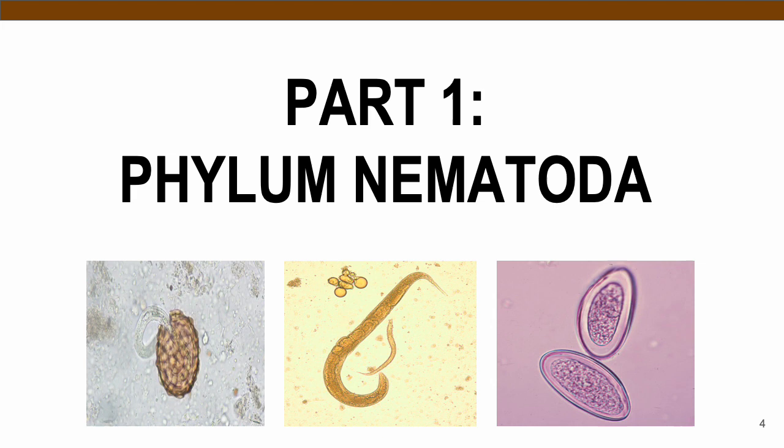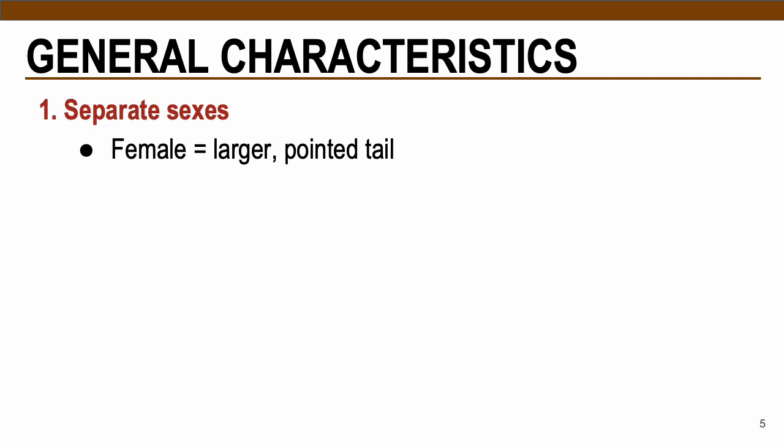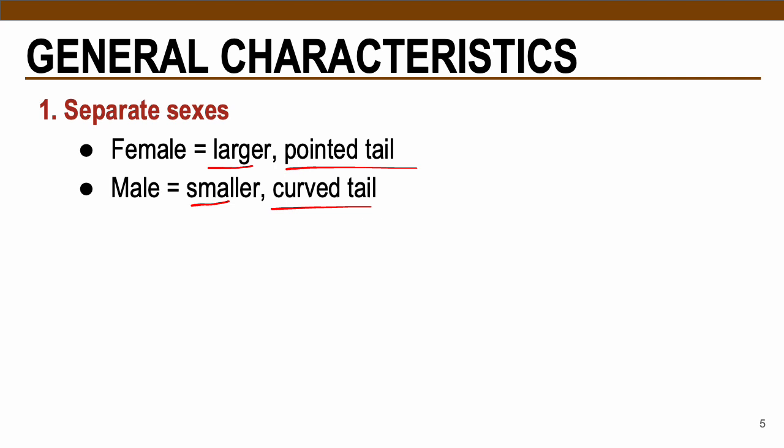Here are the general characteristics of nematodes or roundworms. First, they have separate sexes — the term to describe separate sexes is dioecious. These are dioecious parasites with female and male counterparts at the adult stage. Females are generally larger in size than males and have pointed tails, while males are smaller and contain a curved tail or copulatory bursa.